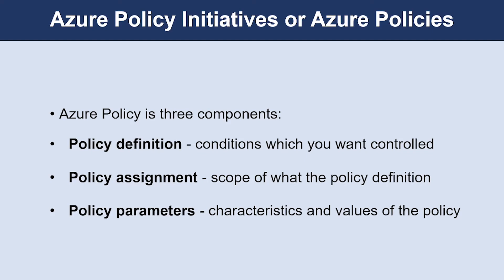Azure Policy is really three components: policy definition, assignments, and parameters. Policy definition is the condition which you want to be controlled. There are built-in definitions such as controlling what type of resources can be deployed, or to enforce the use of tags on resources. Policy assignment is the scope of what the policy definition can take effect around. The scope of assignment can be assigned to an individual resource, resource group, or management group, and policy assignments are inherited by all child resources. Policy parameters help simplify your policy management by reducing the number of policy definitions you must create.